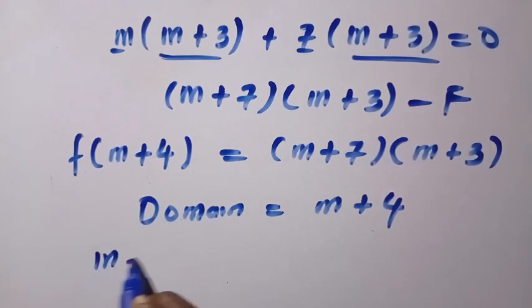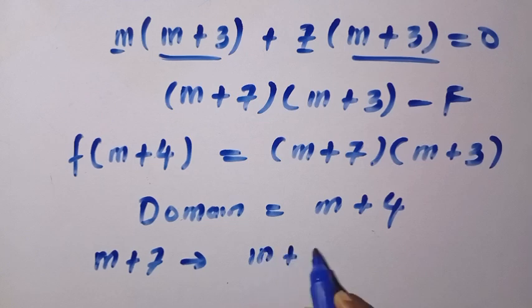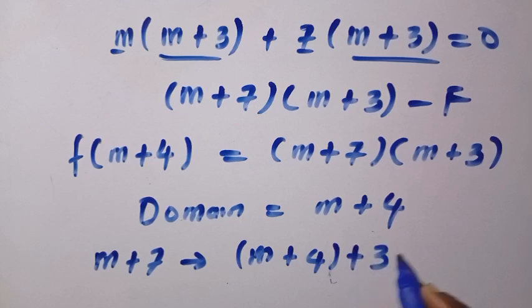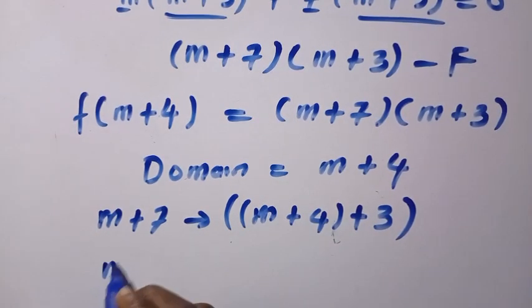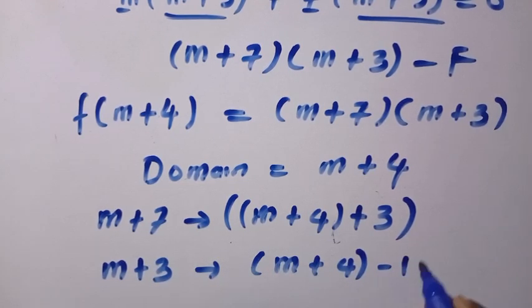For this m plus 7, we can deduce m plus 4. And after getting m plus 4, then we still have a plus 3 at the bracket. And also we have m plus 3. So we need to get m plus 4 from here. But after m plus 4, we need to subtract 1 to get m plus 3.